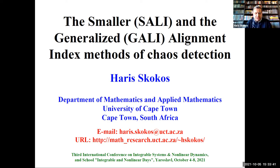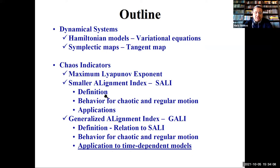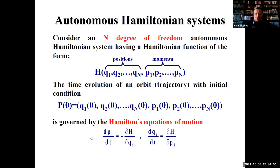The title of my presentation is the SALI and the generalized alignment indices. The brief outline will be: initially a very concise introduction to the models we are using — Hamiltonian systems and symplectic maps. Then I will go to the main topic, the smaller alignment index, SALI, which is a chaos detection technique with some advantages over the maximum Lyapunov exponents. Then I will go to the generalization, the GALI, the generalized alignment index, its connection with SALI, and hopefully some applications to time-dependent systems.